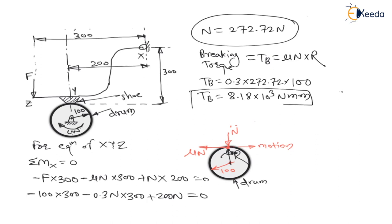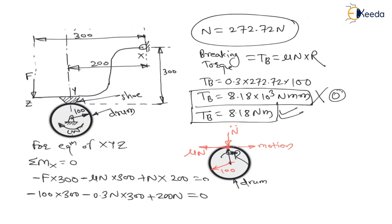This is the braking torque, but the question asks for the answer in newton meter. Since it is a fill-in-the-blanks question, if you put the answer in newton mm they will give you zero marks. Therefore, braking torque = 8.18 newton meter. You have to type 8.18 and for this answer you will get two marks. In the next lecture, we will see one more numerical on shoe brake. Thank you.